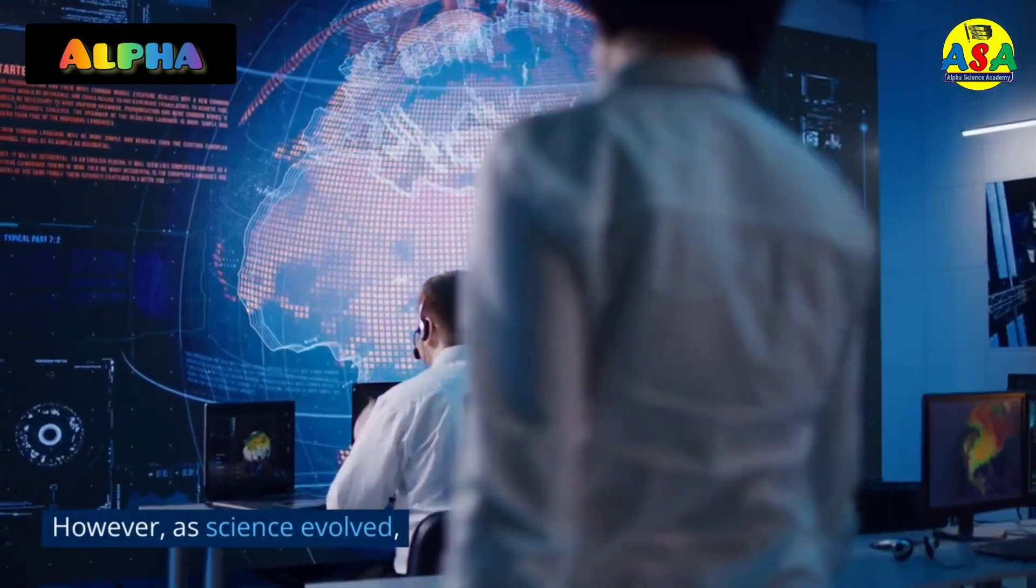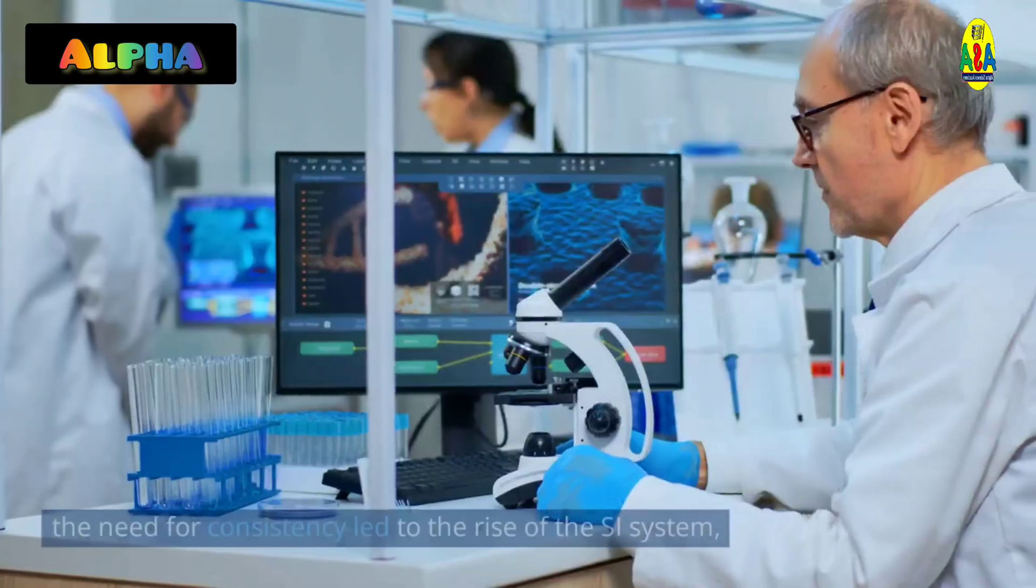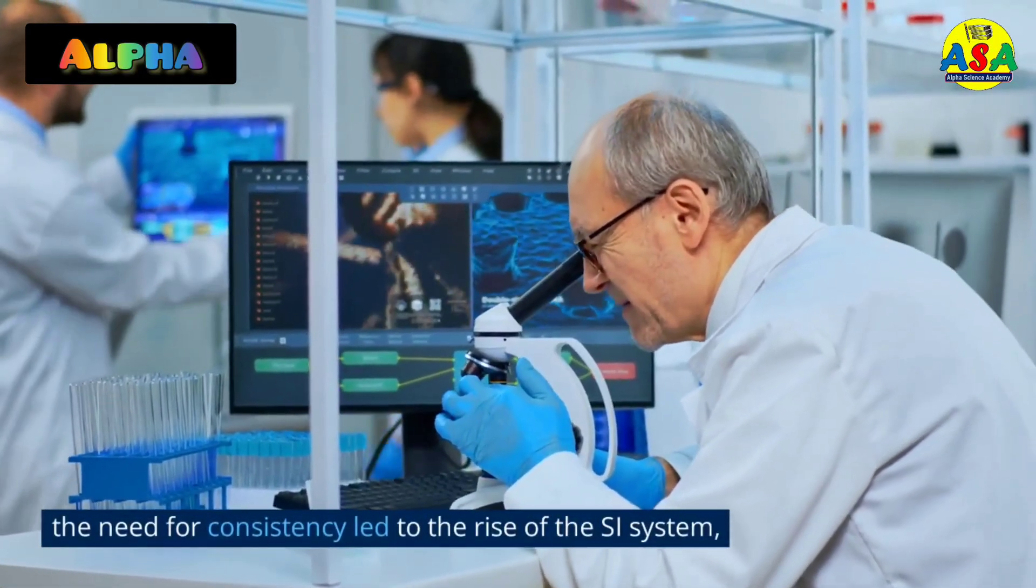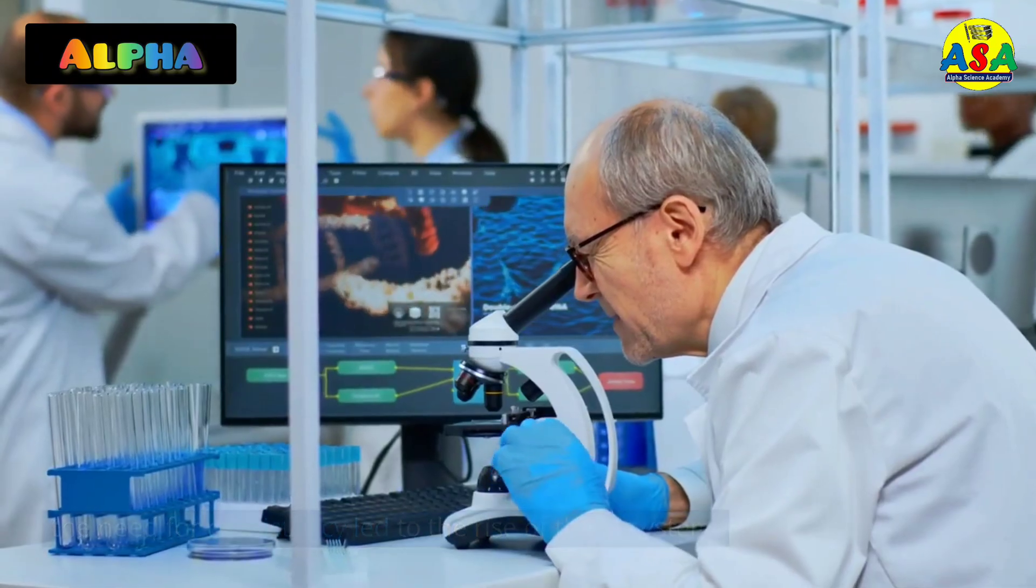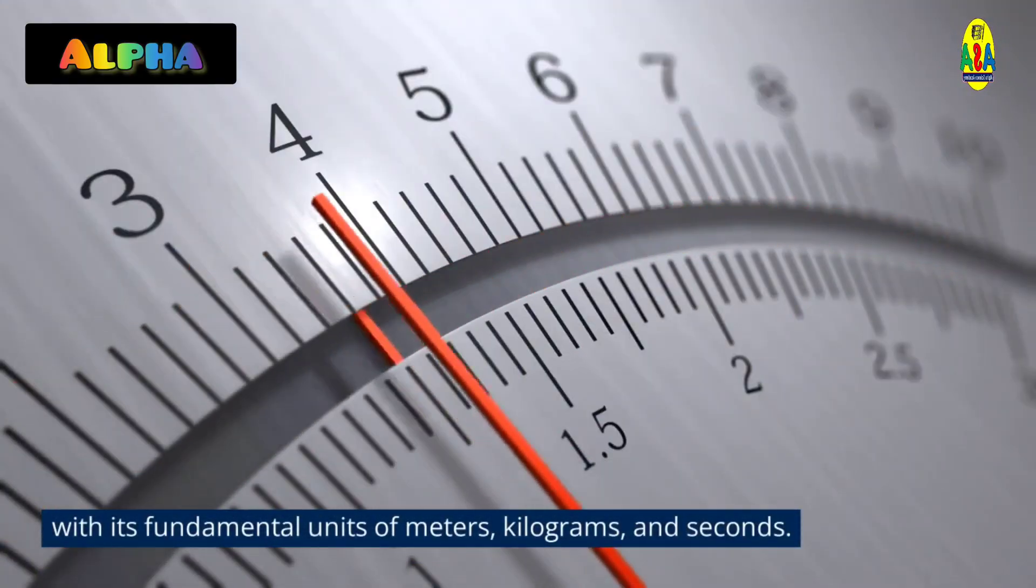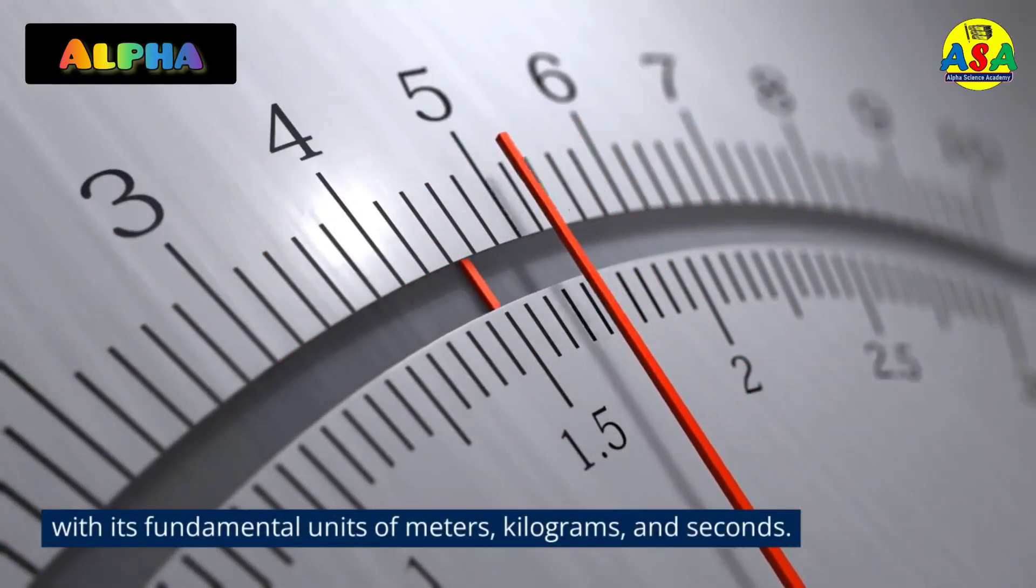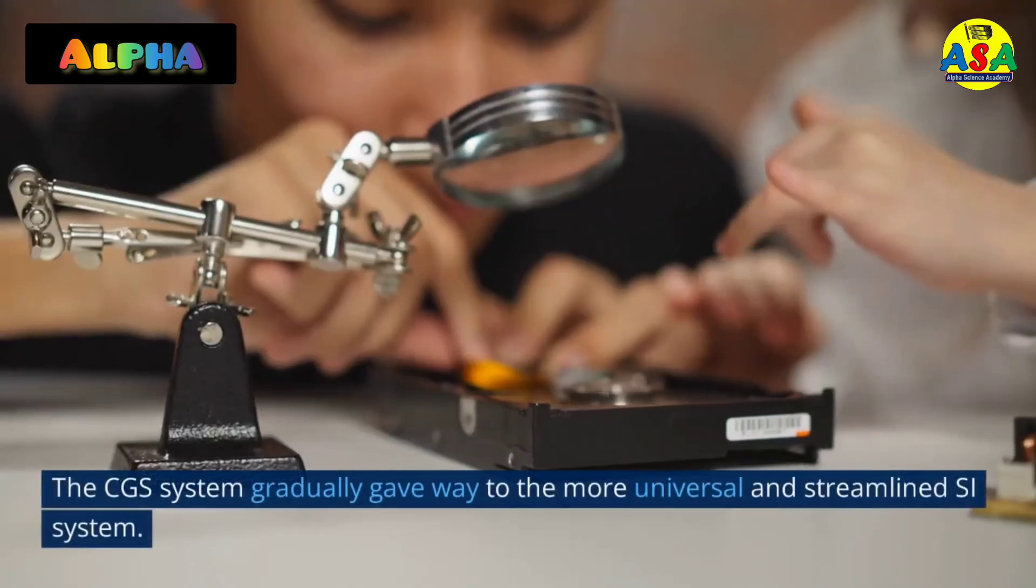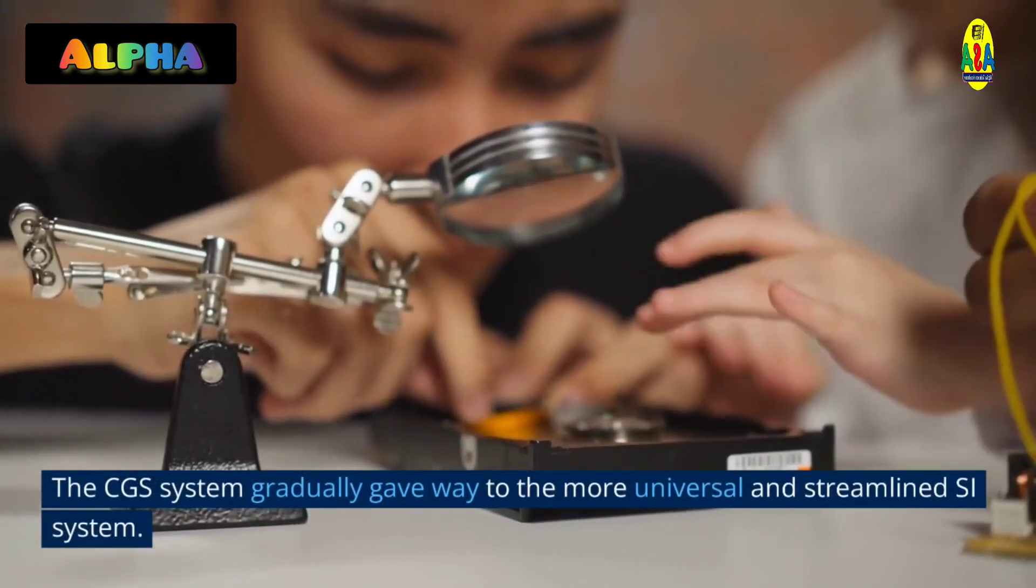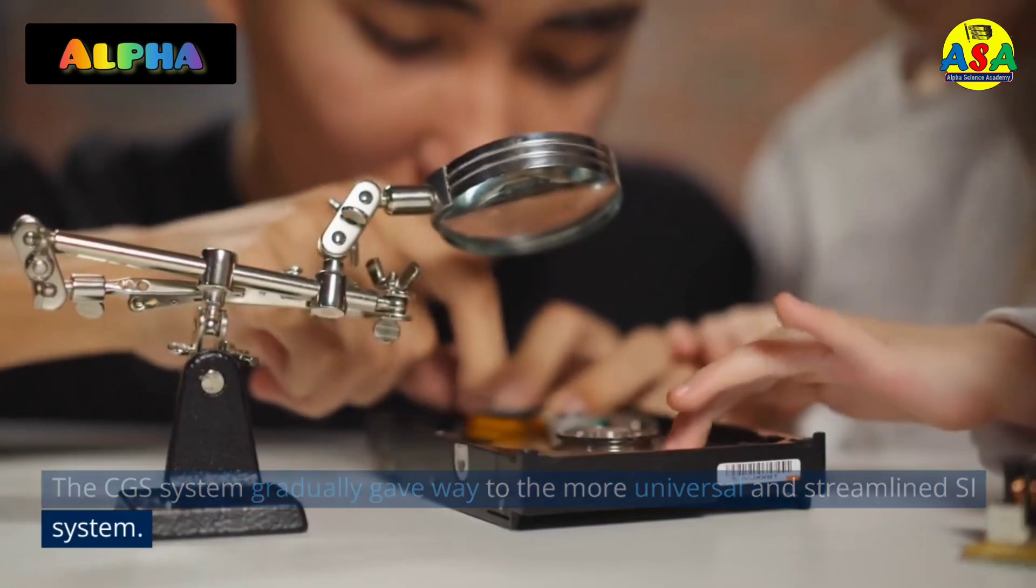However, as science evolved, the need for consistency led to the rise of the SI system. With its fundamental units of meters, kilograms, and seconds, the CGS system gradually gave way to the more universal and streamlined SI system.